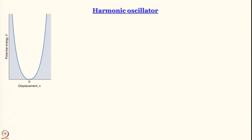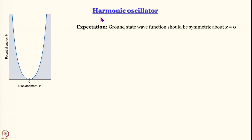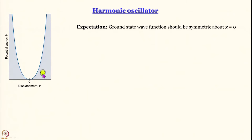Today, with this prior knowledge, we try to tackle the problem of the harmonic oscillator first. For the harmonic oscillator, the potential energy is a parabolic potential — half kx² kind of potential. The first expectation is that the ground state wave function has to be symmetric about x = 0, since the potential itself is symmetric with respect to x = 0. What kind of a function can we think of? We can think of a Gaussian function.